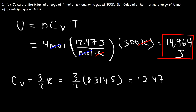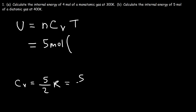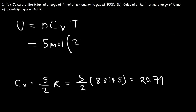Now let's move on to part B: calculate the internal energy of 5 moles of a diatomic gas at 400 Kelvin. So n is 5. For a diatomic gas, Cv is 5/2 times R, so it's 5/2 times 8.3145, which gives us 20.79 joules per mole per Kelvin.